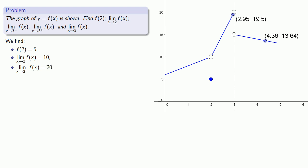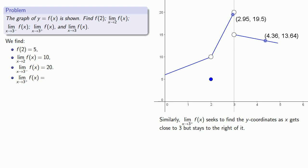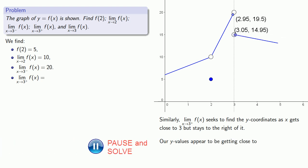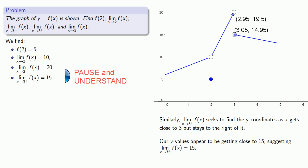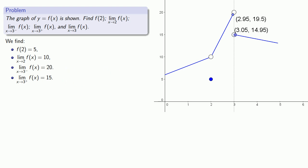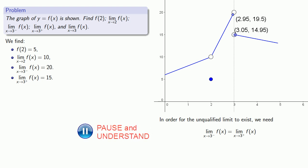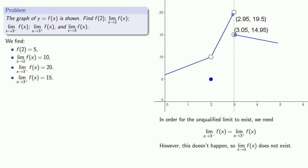Similarly, the limit as x approaches 3 from above of f of x seeks to find the y coordinates as x gets close to 3 but stays to the right of it. Following along on our graph, as x gets close to 3 but stays to the right, our y values appear to be getting close to about 15. This suggests that the limit as x approaches 3 from above of f of x is equal to 15. Finally, remember that in order for the unqualified limit to exist, we need the limit from below and the limit from above to be equal. However, this doesn't happen, so the limit does not exist.